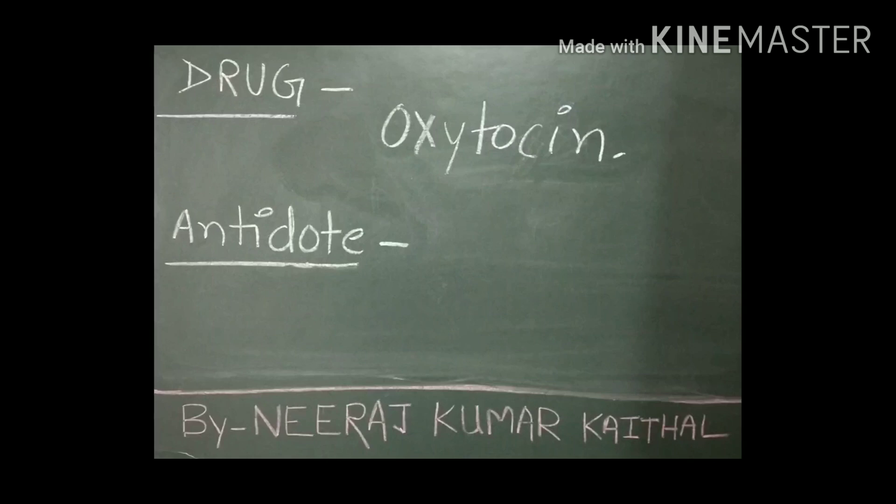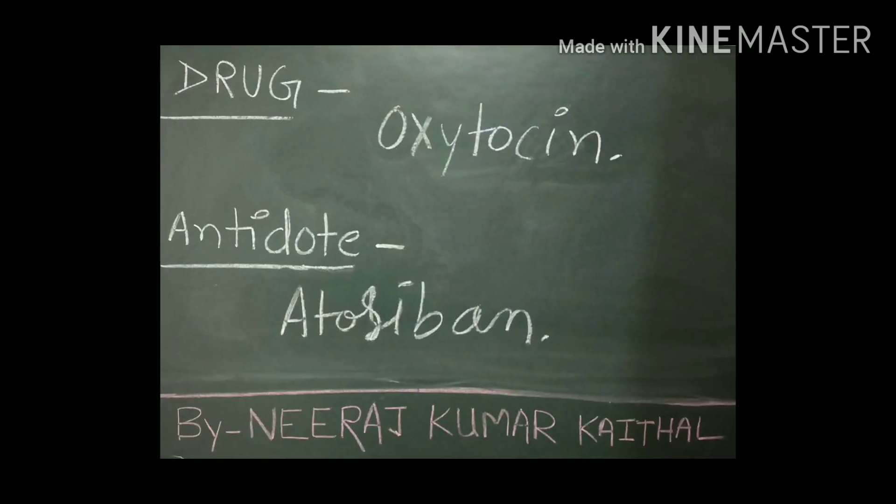Drug name: Oxytocin. The antidote of Oxytocin is Atosiban. Atosiban is used as an antidote for Oxytocin.